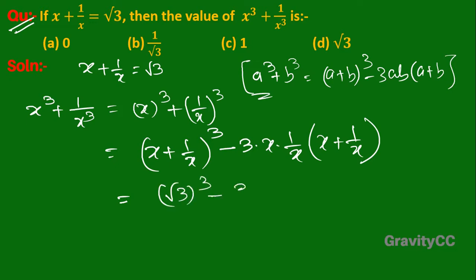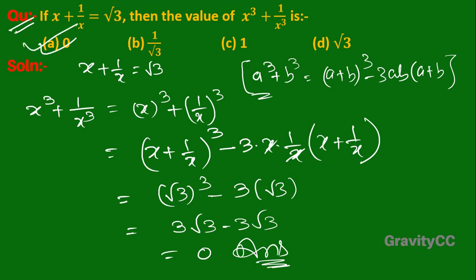So 3√3 - 3√3 equals 0. Answer: Option (a) is the correct answer.